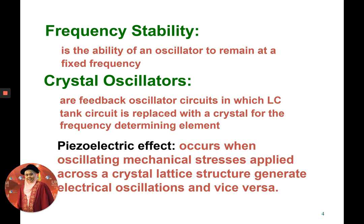Frequency stability is the ability of an oscillator to remain at a fixed frequency. We don't want an oscillator that produces a frequency that is always changing — we want the oscillator to produce a frequency at a fixed rate. A high frequency stability oscillator is needed especially when modulating two signals: the information signal and the carrier signal.